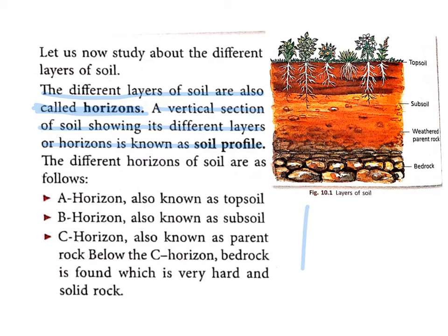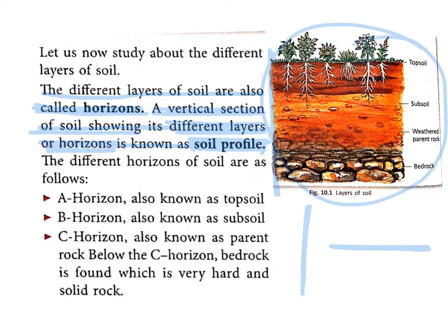This is vertical and this is horizontal. So when we cut the soil vertically, we get a vertical section. A vertical section of soil showing all different layers or horizons is called a soil profile. This diagram shows a soil profile.